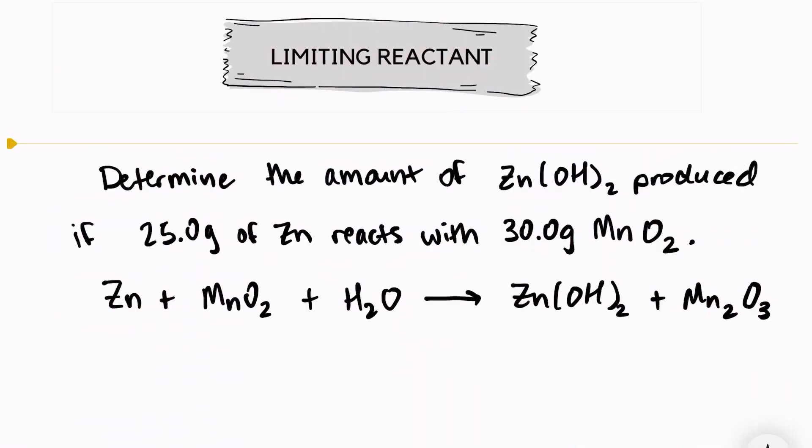Hi, welcome back. We are going to take a look at a limiting reactant problem. The problem says determine the amount of zinc hydroxide produced if 25 grams of zinc reacts with 30 grams of manganese oxide. We want to know the amount of zinc hydroxide produced and we're given the amounts of reactants that we're starting with.